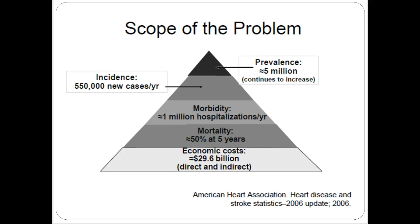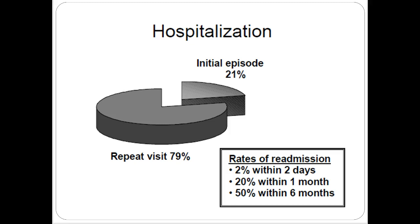Heart failure is a huge cause of hospitalizations and readmissions. Initial episode accounts for 21% of hospitalizations, repeat visits 79%. Readmissions are a big deal because if a patient readmits within a certain timeframe after discharge, insurance companies often won't pay for that hospitalization. They'll say it was up to you to get the patient the resources they need to avoid readmission. Heart failure patients are so likely to readmit that it really needs to be a focus of care.